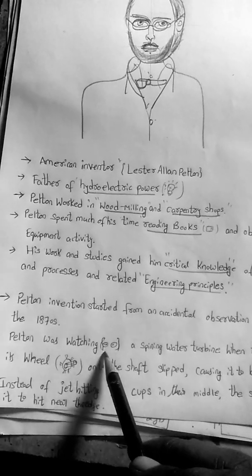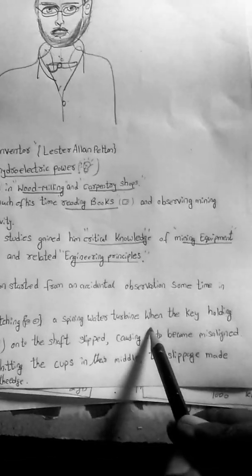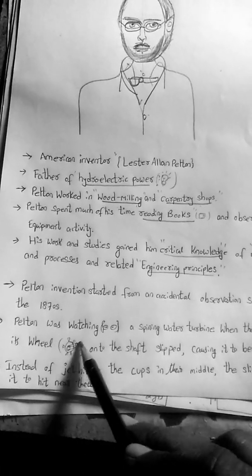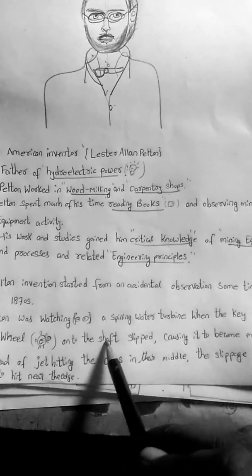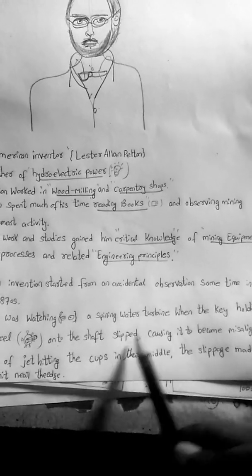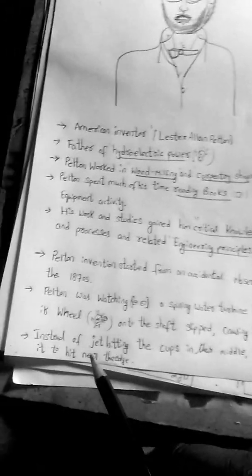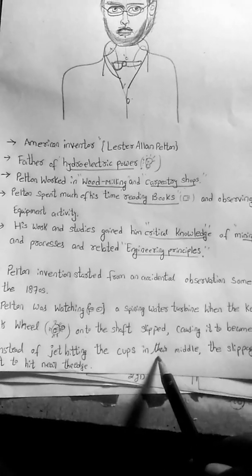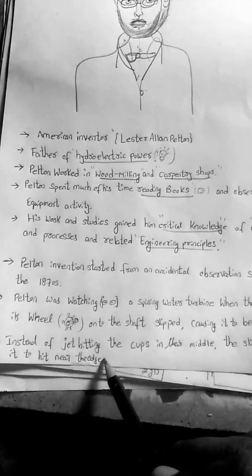Pelton was watching a spinning water turbine with a keyhole wheel. This is a wheel on a shaft, and the key on the shaft slipped, causing it to become misaligned. Instead of the jet hitting the cup in the middle, the slippage made it hit near the edges.